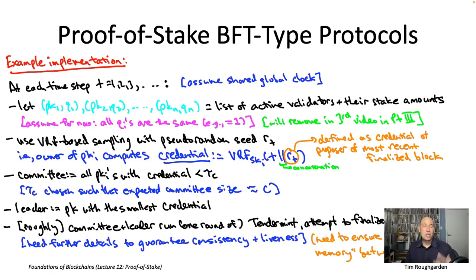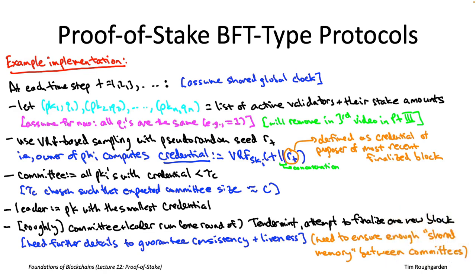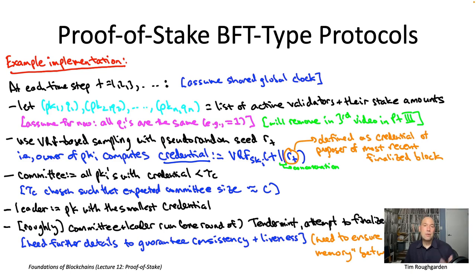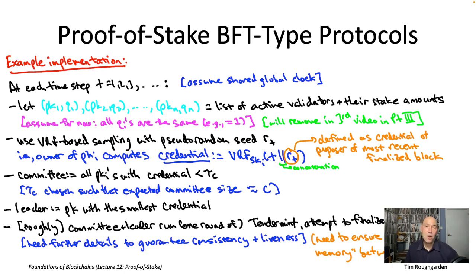We're exploring using the VRF — verifiable random function — based random sampling. The protocol proceeds in rounds or time steps. At each time step, each owner of a public key in the staking contract evaluates a verifiable random function using the private key corresponding to their registered public key. Everybody evaluates their VRFs on the same input, but they have different private keys, so they get different outputs. Those are called their credentials for a given round.